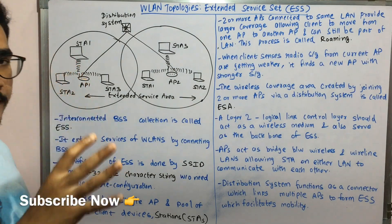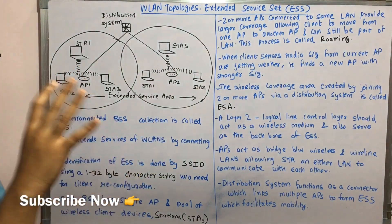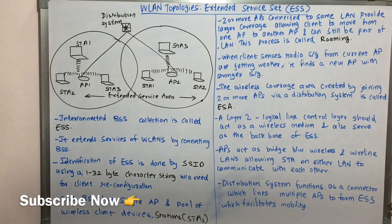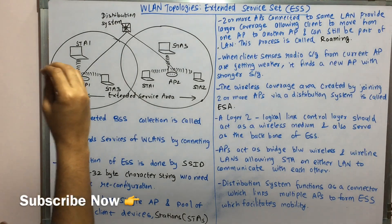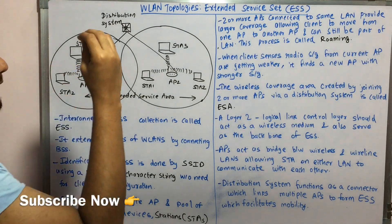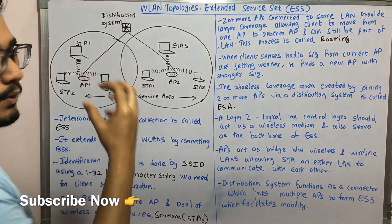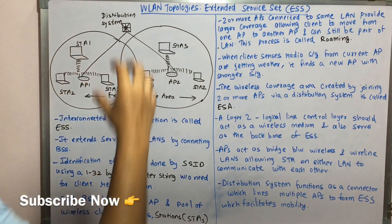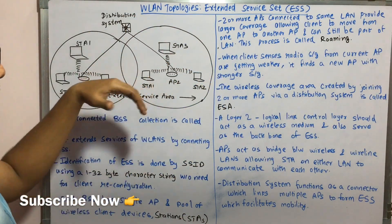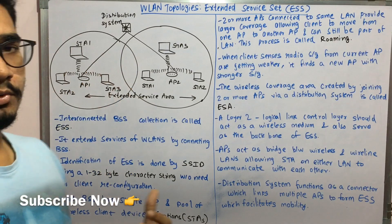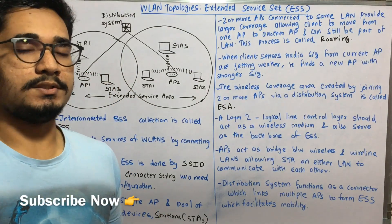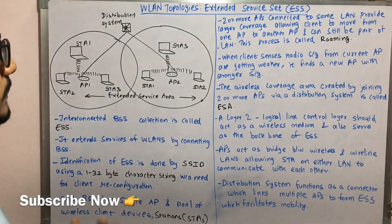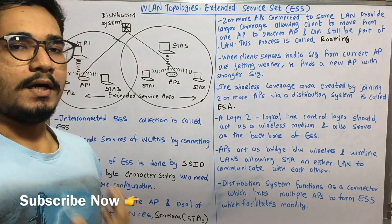The identification of BSSs is done with the help of an SSID, which is a 1 to 32 byte character string. It does not require any need for client reconfiguration — meaning you can assign that 1 to 32 byte character string to the mobile stations without needing to reboot or reconfigure them at regular intervals; it is updated as needed.